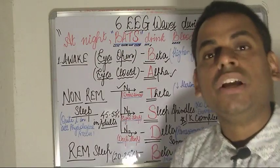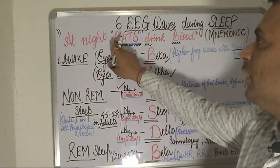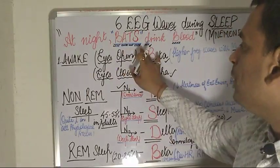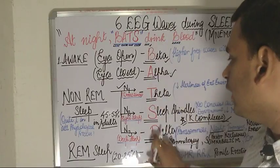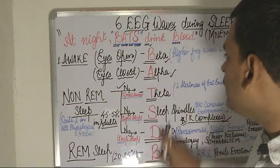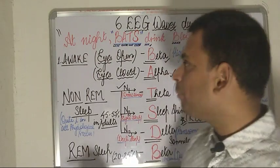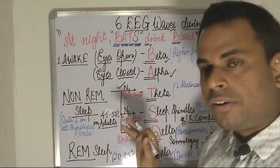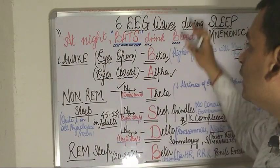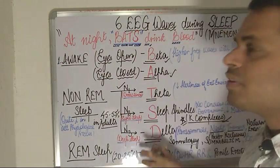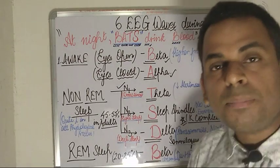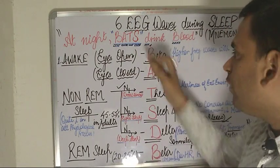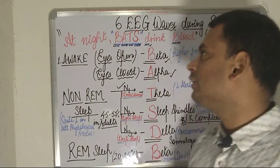Breaking down the mnemonic 'At night BATS Drink Blood': the letters B-A-T-S correspond to Beta, Alpha, Theta, and Spindles (sleep spindles and K complexes); D stands for Delta; and the final B of Blood stands for Beta again (REM sleep). This gives the six EEG waveforms in perfect sequential order during the sleep cycle.